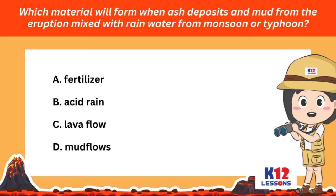Which material will form when ash deposits and mud from the eruption mixed with rainwater from monsoon or typhoon? A. Fertilizer. B. Acid rain. C. Lava flow. D. Mud flows.